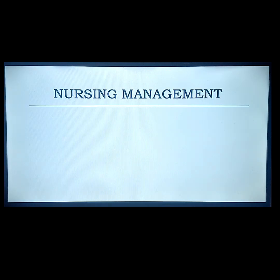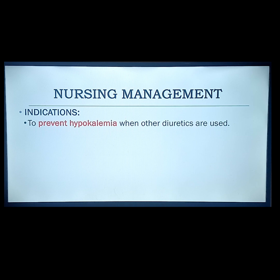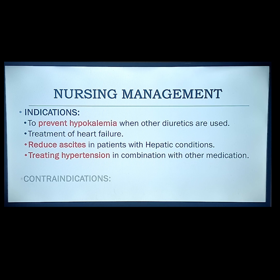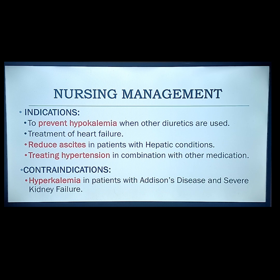Indications include: for patients who need diuretics but have a low potassium level — to prevent hypokalemia when other diuretics are in use; treatment of heart failure; reducing ascites — accumulation of fluids in the peritoneal cavity, commonly a complication of hepatic conditions; and treatment of hypertension in combination with other medications. Contraindications include hyperkalemia, patients with Addison's disease, and severe kidney failure — because this drug retains potassium, these patients are in danger of cardiac arrhythmias.